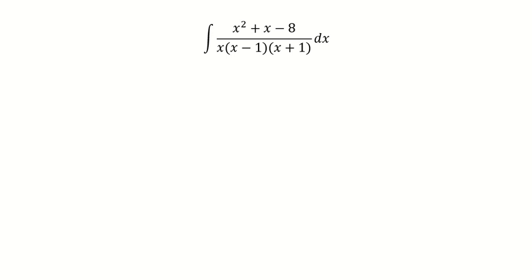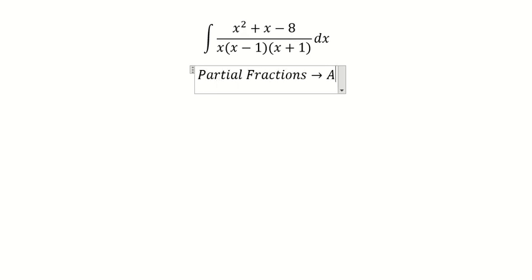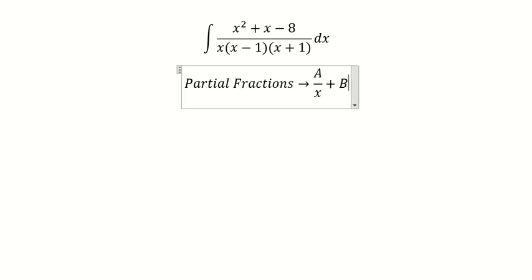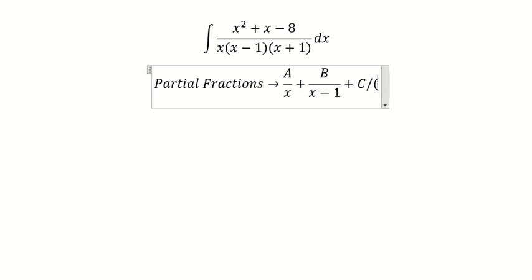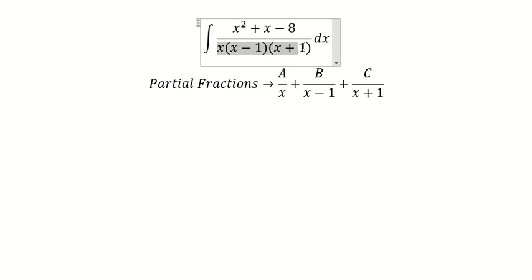Hello everybody. Today I want to show you how to answer this one, which is about partial fractions. In this case I will put A over x, B over x minus 1, and C over x plus 1. Now, because we have 3 fractions, that's why we need to put 3 terms in here.